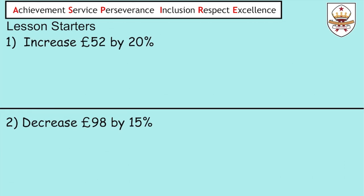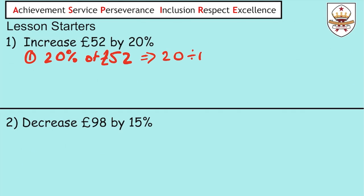Let's go over the answer to question number one. We're going to increase £52 by 20%, so the first thing we're going to do is find 20% of £52. We do this by saying that 20% is the same as 20 divided by 100, and 'of' is the same as times, and then we're going to times it by 52. It gives us an answer of £10.40.